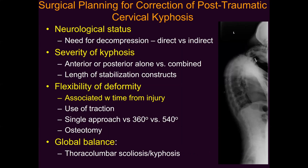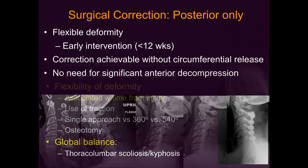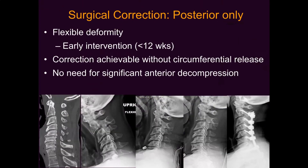In terms of surgical planning, the decision-making process is largely dictated by the flexibility of the deformity and the ability to achieve realignment of the cervical spine, which is typically associated with the length of time that's passed since the injury or since the deformity started to develop. This dictates whether you can do a single approach — whether posterior or anterior — versus requiring multiple approaches or osteotomies.